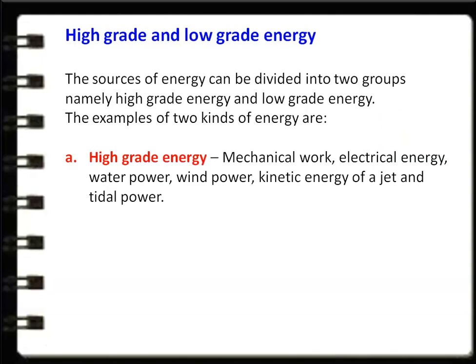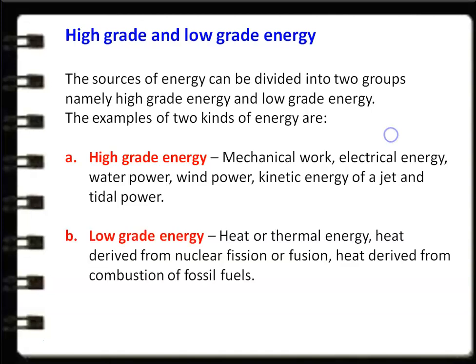Examples of high-grade energy are mechanical work, electrical energy, water power, wind power, kinetic energy of a jet, and tidal power. Examples of low-grade energy are heat or thermal energy, heat derived from nuclear fission or fusion, and heat derived from the combustion of fossil fuels. In summary, all forms of heat energy are low-grade energy, and all forms of work energy or power are high-grade energy.